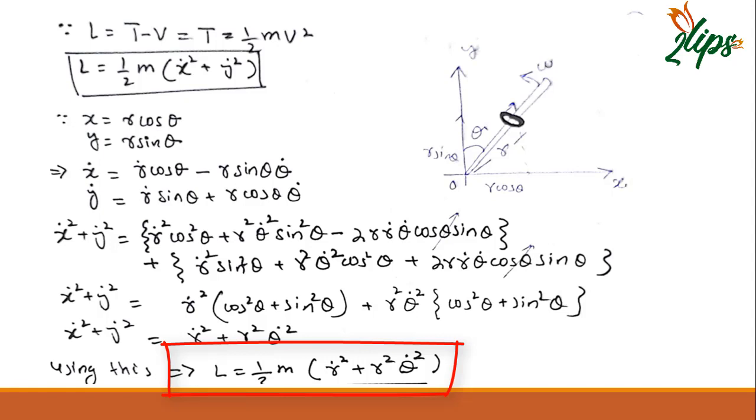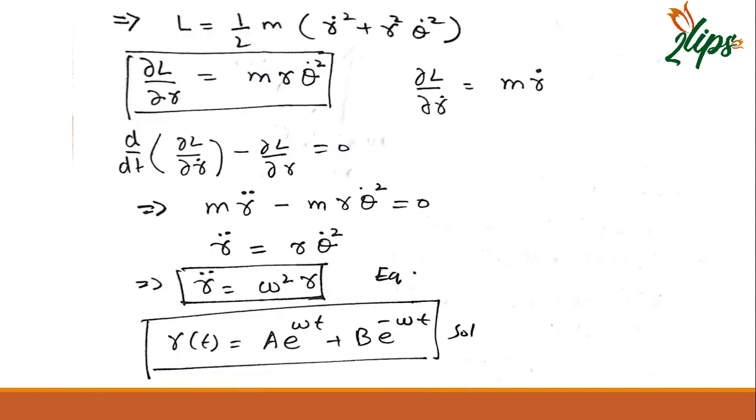Thus we have this L. All we have to do is find the equation of motion. Here we have R and theta as our coordinates, but since we know that theta dot is constant, there is a constraint on theta. That's why I am expressing this equation in terms of R.